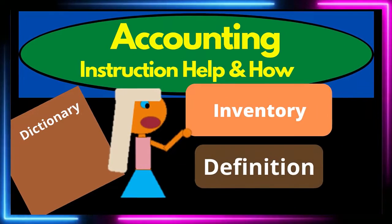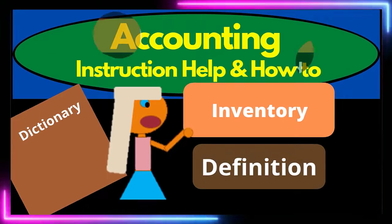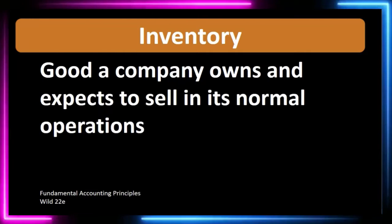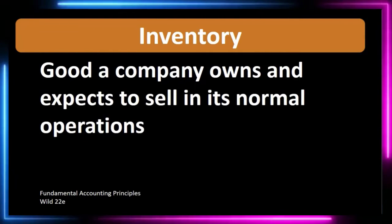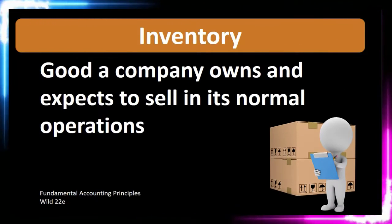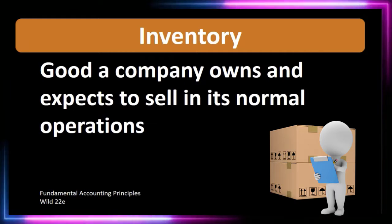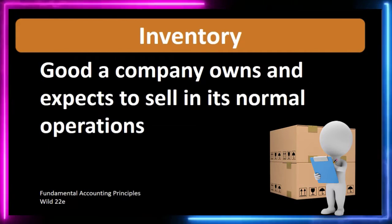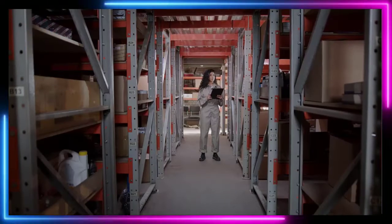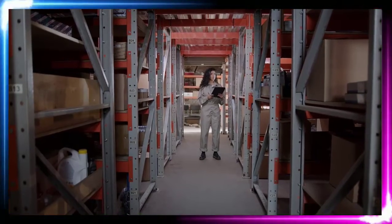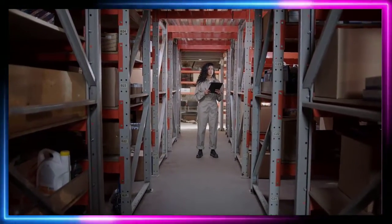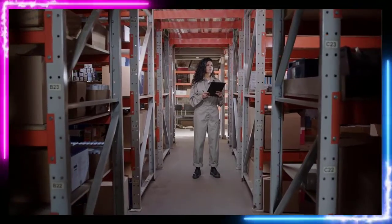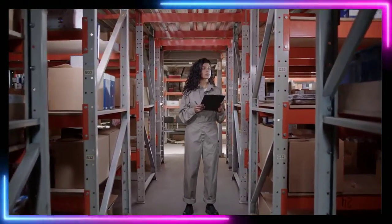In this lecture we're going to define inventory according to fundamental accounting principles, Wild 22nd edition. The definition of inventory is goods a company owns and expects to sell in normal operations. So we're talking about a good — generally an asset.